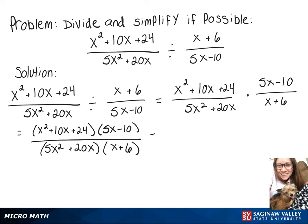We have a quadratic on top that we can factor. So that will turn into x plus 4 times x plus 6. And with our 5x minus 10, we can factor out a 5, which I'll bring out front here. And that will leave x minus 2.